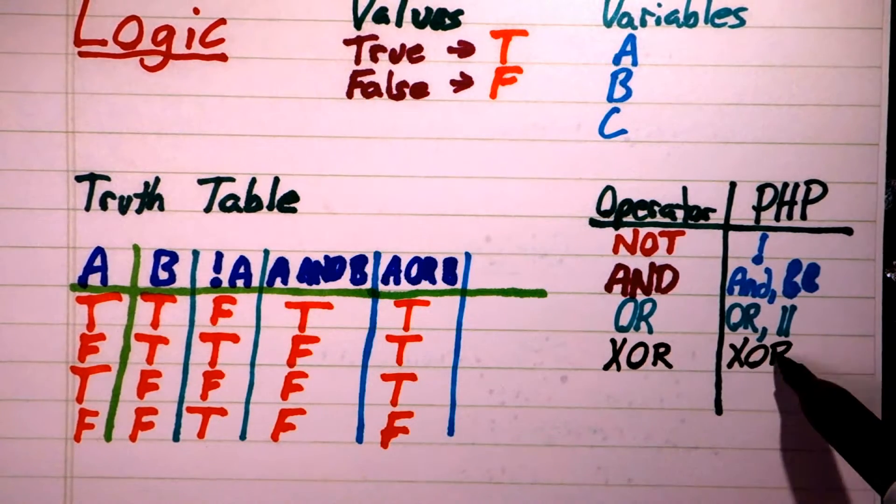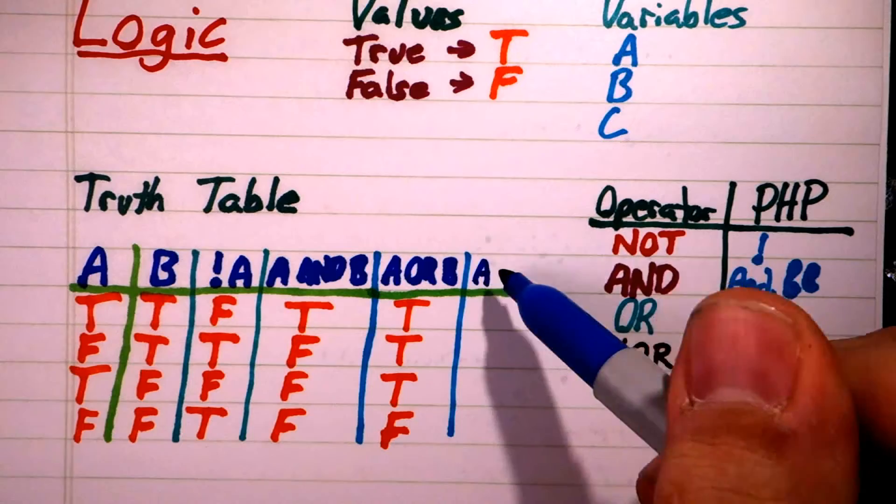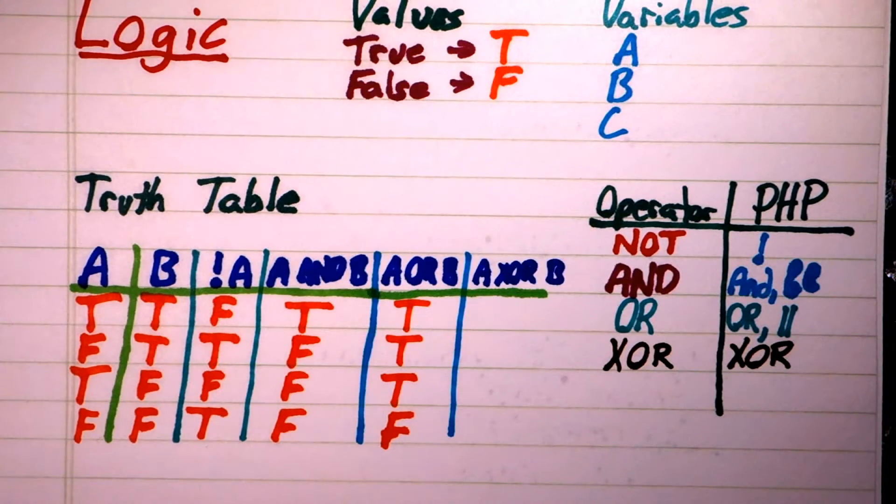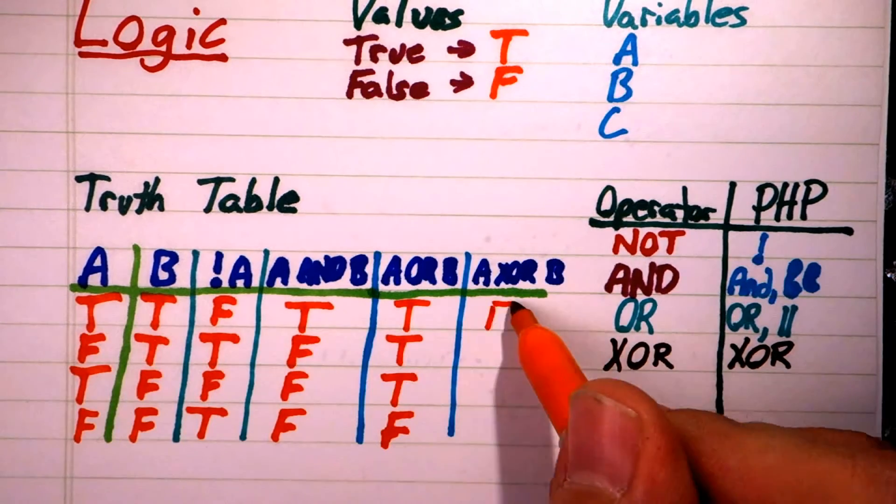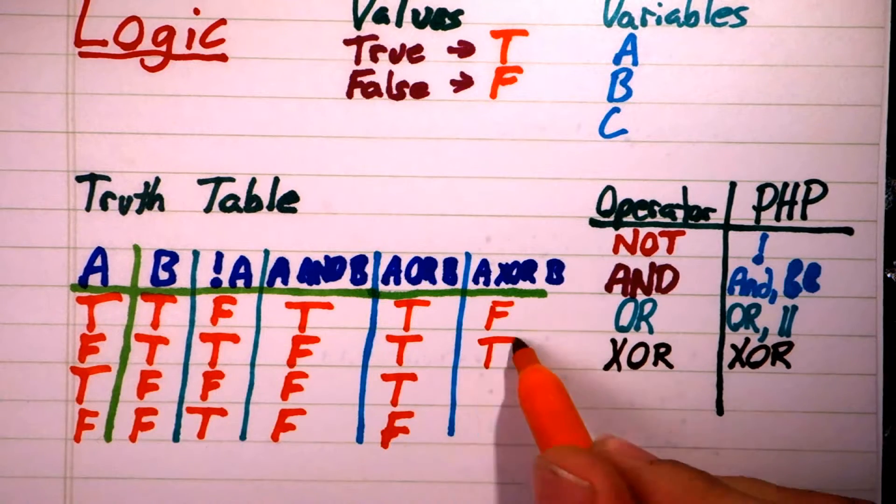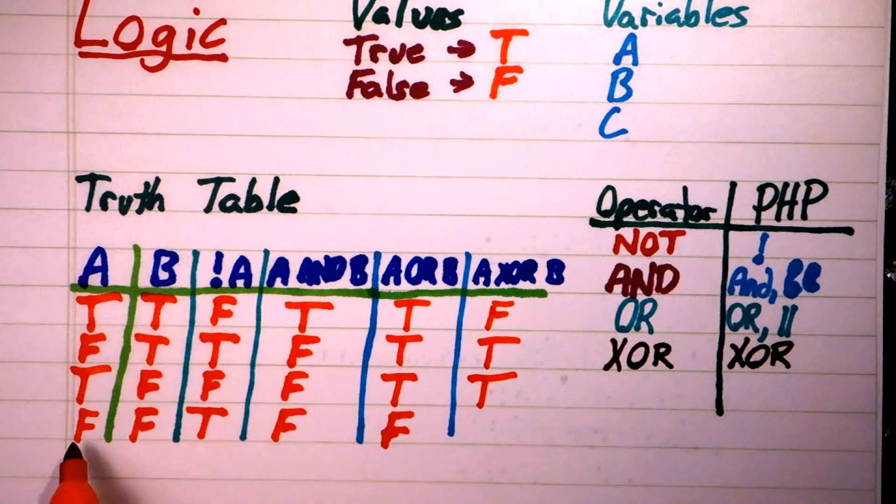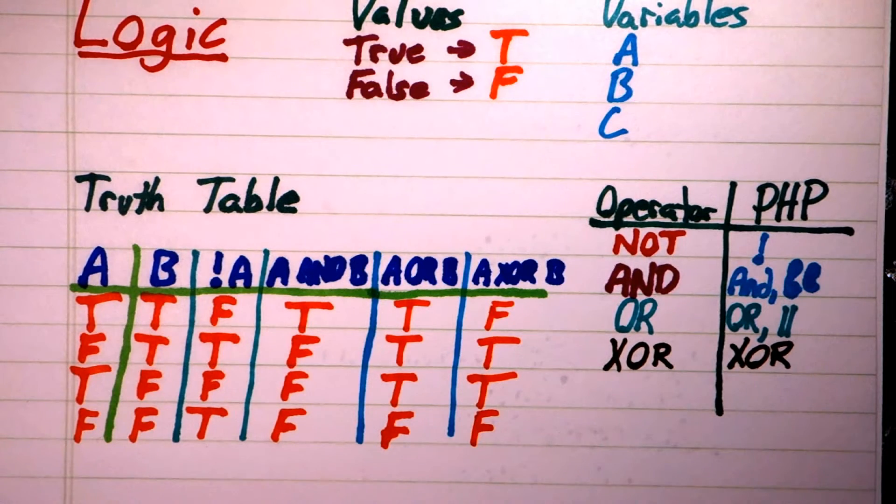The final operator is the EXCLUSIVE OR operator. It is true only when the inputs are different. Therefore, it is only true when exactly one of the values is true.